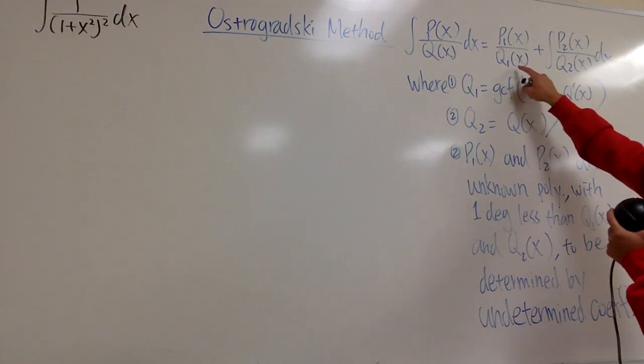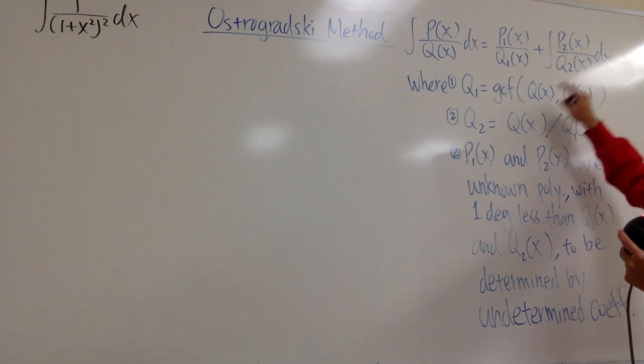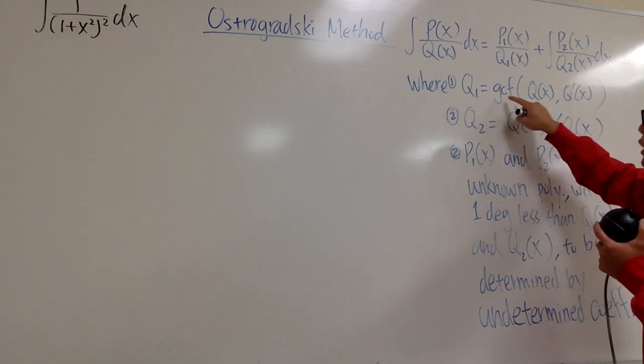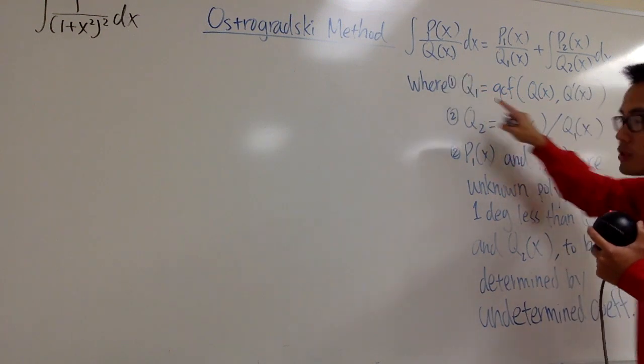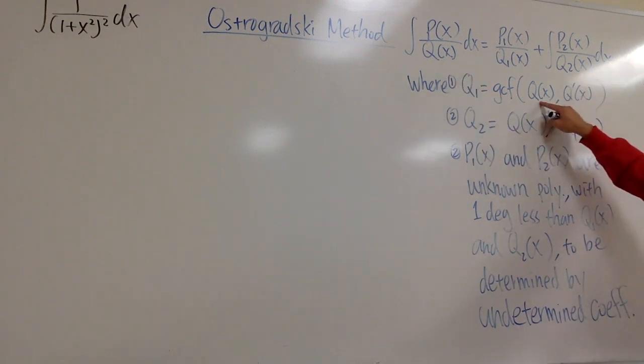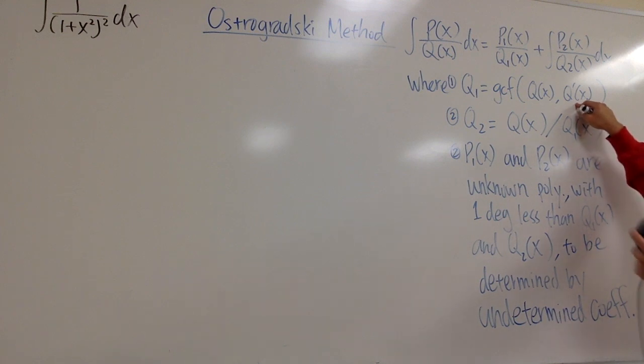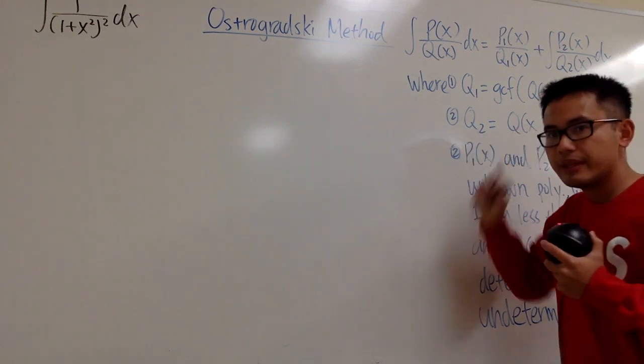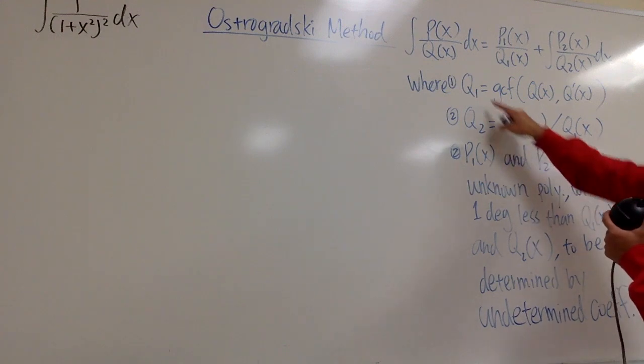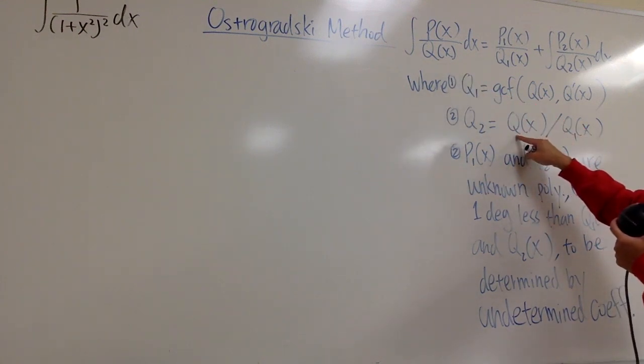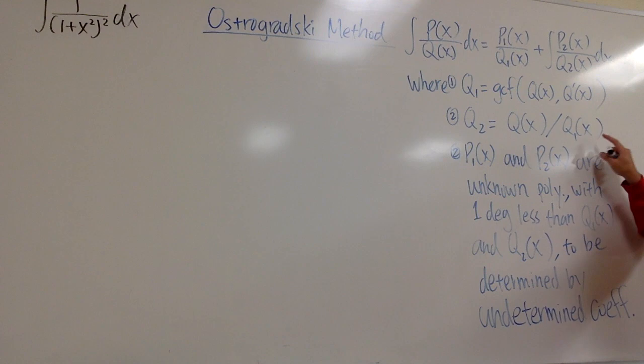First of all, I will have to explain to you guys the q1 and then the q2. q1 of x is just the greatest common factor of the original q of x and also its derivative, so q of x and q prime of x. And then the q2 is just the remaining part. You can look at this as original denominator, namely q of x, divided by q1.